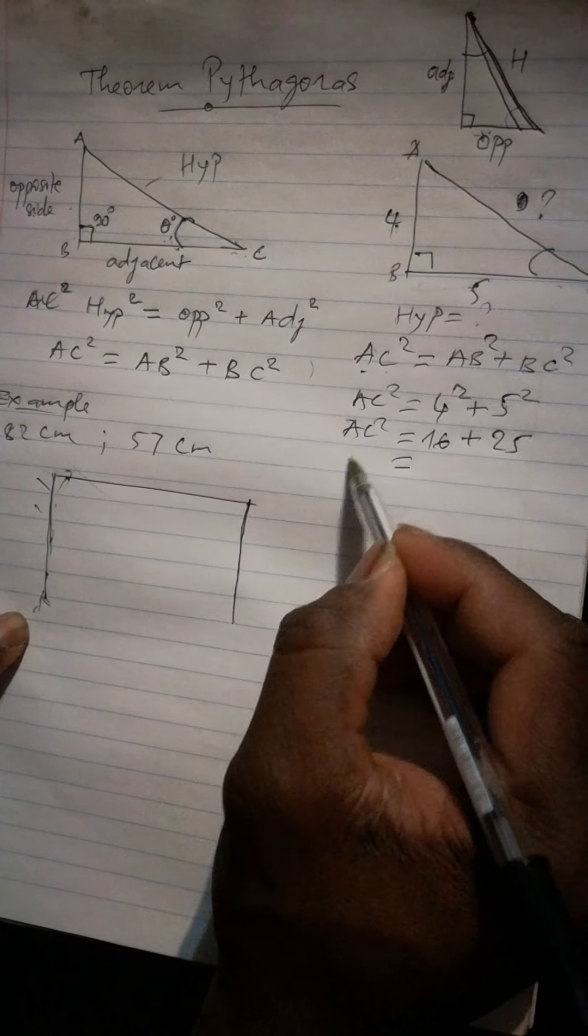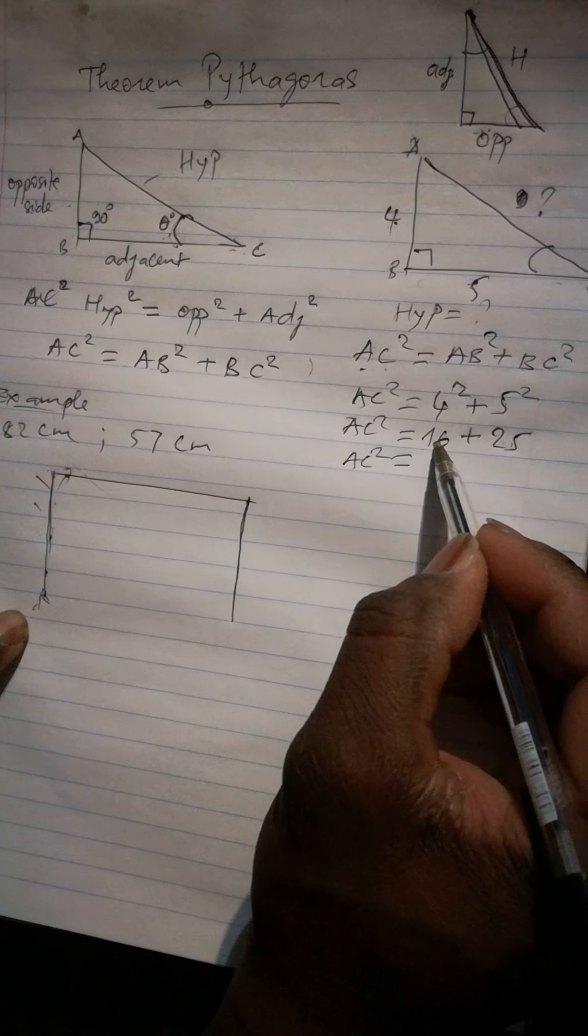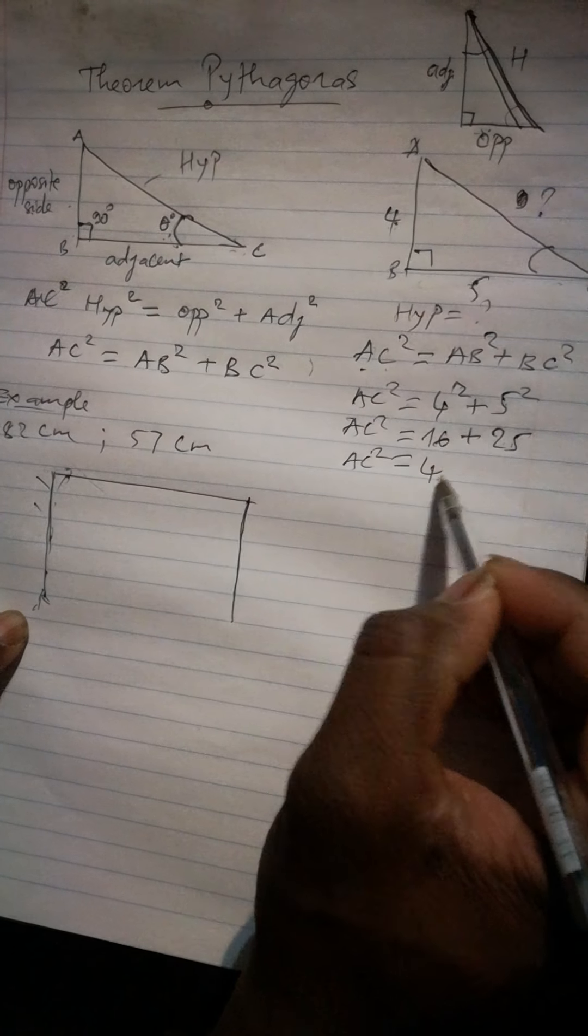So our AC square equal to 4 square is 16 plus our 5 square is 25. So here, AC square equal to 41.